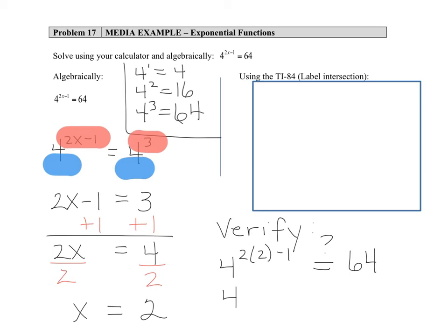So we'll simplify this expression working on the exponent, 4 times 4, doing the multiplication first, 4 to the 4 minus 1, and then 4 minus 1 gets us 3. And as we found before, 4 to the 3rd power does equal 64, so we've verified it algebraically.